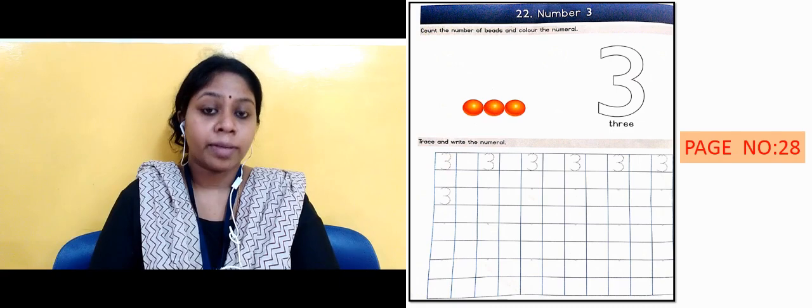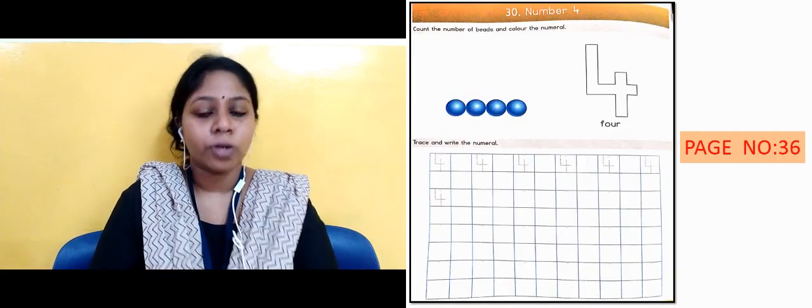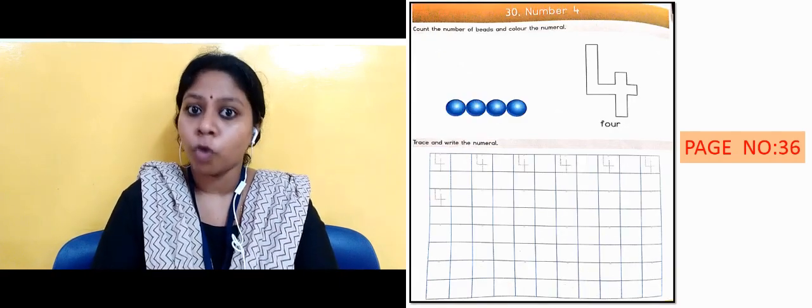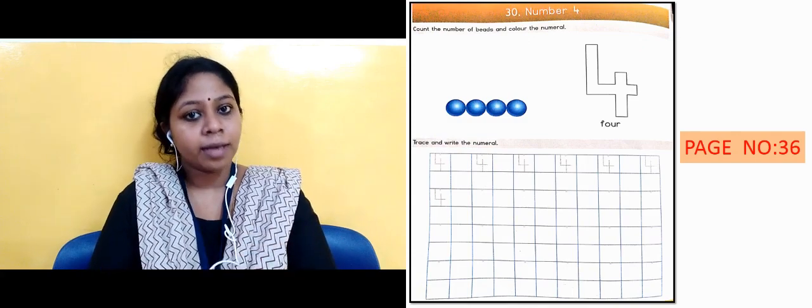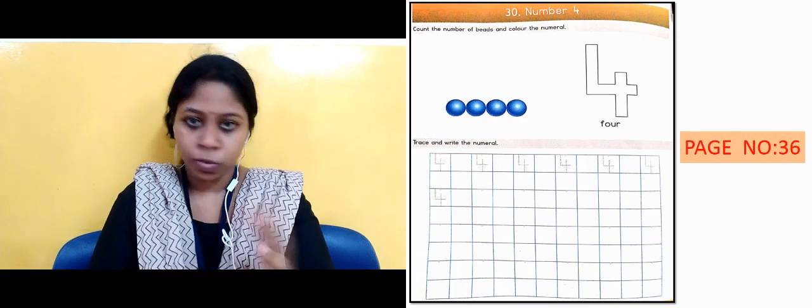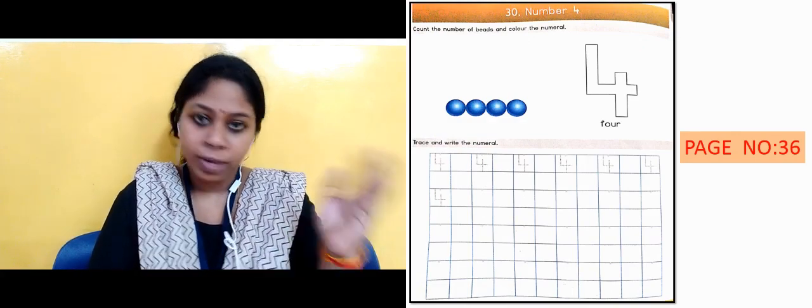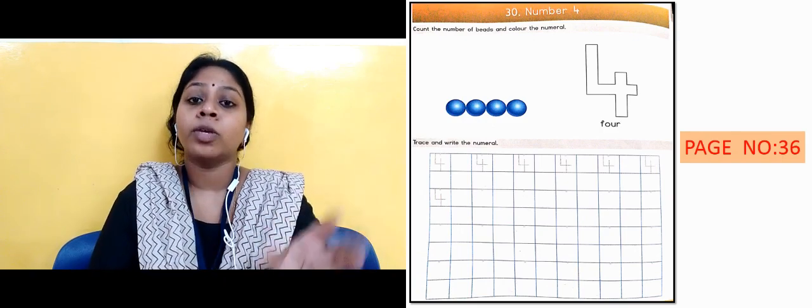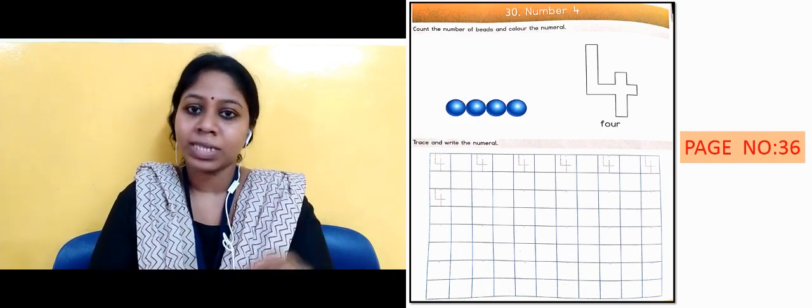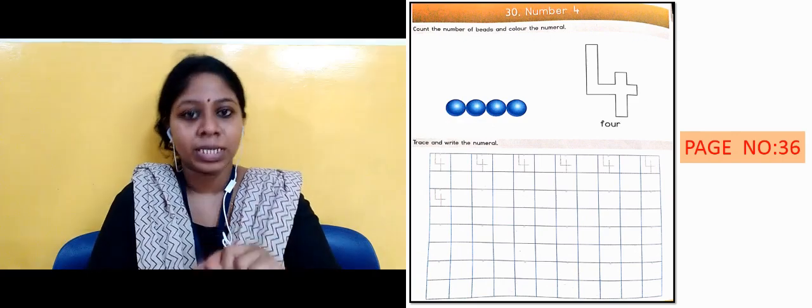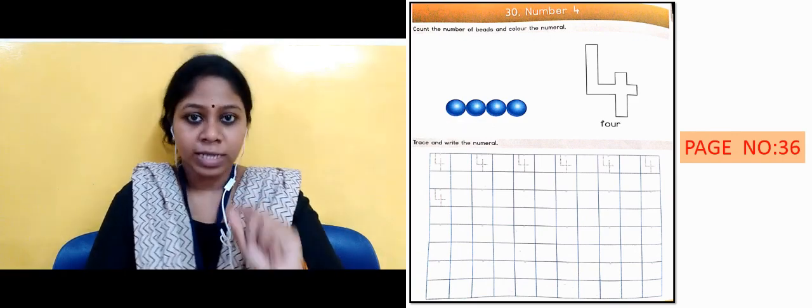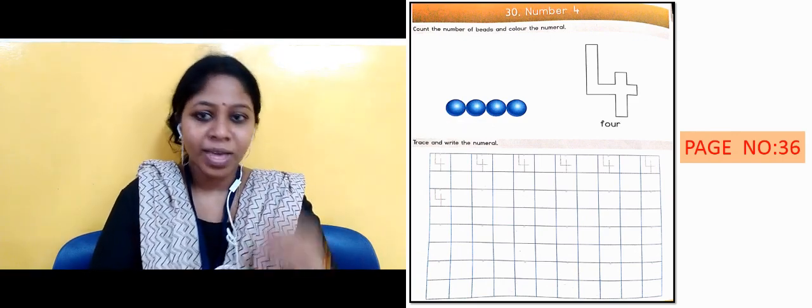Next slide is showing page number 36 and the topic is number 4. Here also what will we do? You will count the objects. You will count the beans. Then you have done the coloring already and you have already done the tracing and writing part. So you will yourself revise this exercise by writing and practicing.